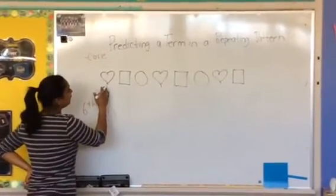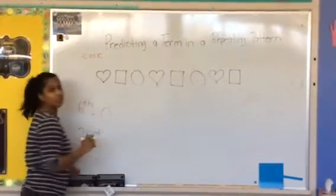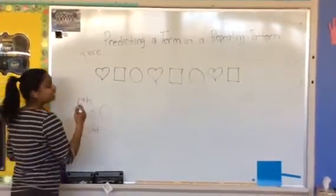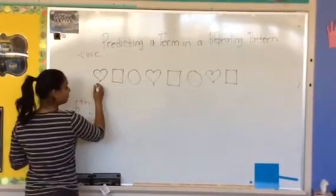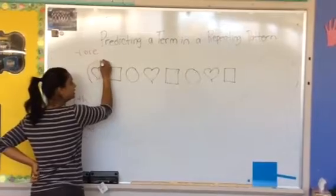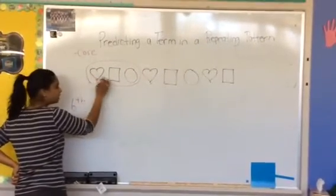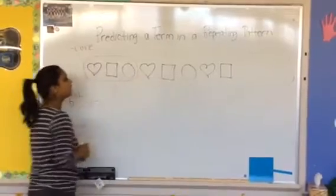My pattern is going heart, square, circle, heart, square, circle, heart, square, and then we know the next would be circle and then it would repeat. Listening to that, I'm going to circle the core, which I have noticed is—I'm sorry—heart, square, circle. And it keeps going heart, square, circle. So my core is three terms long.